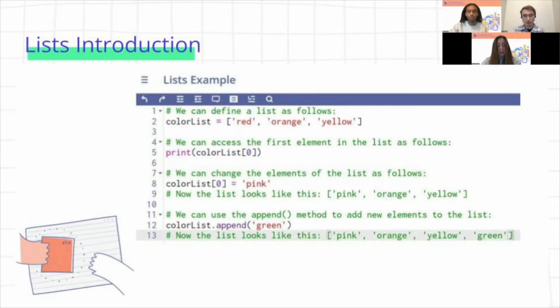And then on line five, we try printing the first element in the list. So lists are zero indexed, which means that the first index is index zero. So when we print color list at index zero, this is going to print out red if we actually ran this code.